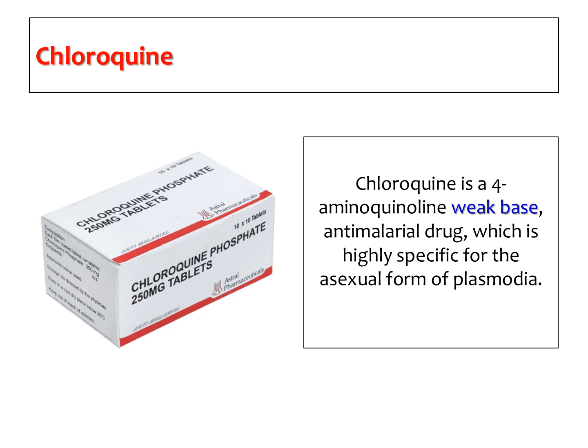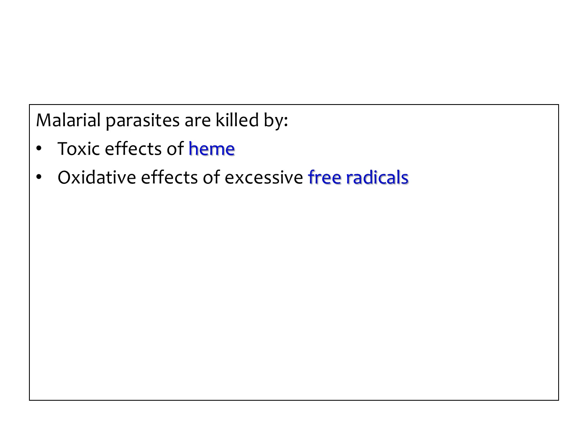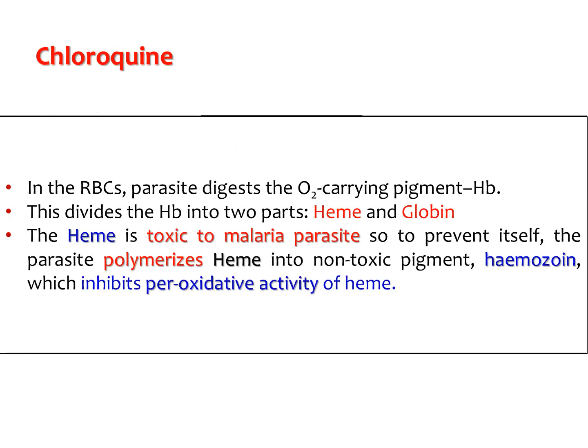The first important drug we will discuss is chloroquine. Chemically, it is a 4-aminoquinoline derivative. It is a weak base with alkaline nature, and is highly specific for the erythrocytic form of the plasmodia while the parasites are present in the human being. To understand the mechanism of chloroquine, we should recall that malarial parasites are killed by the toxic effects of heme, which the malarial parasites themselves produce when they digest hemoglobin — toxic amounts of heme are released which can kill the malarial parasites themselves through oxidative effects of excessive free radicals.